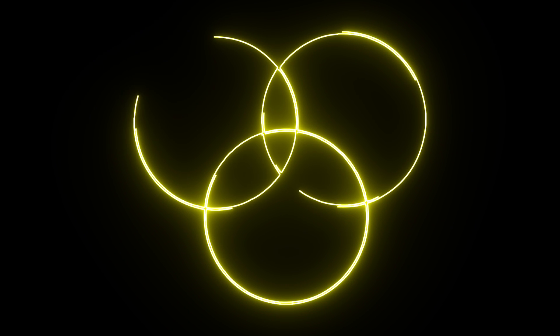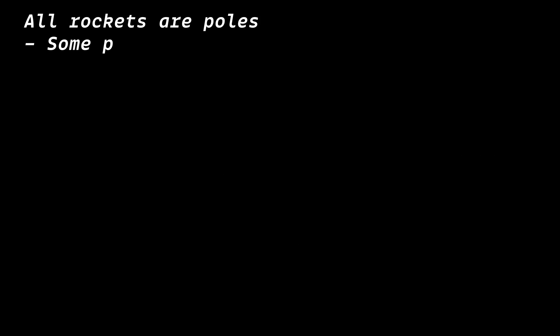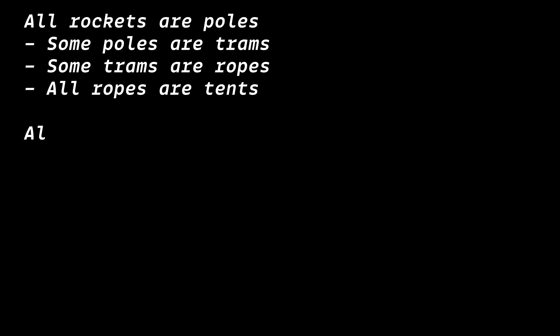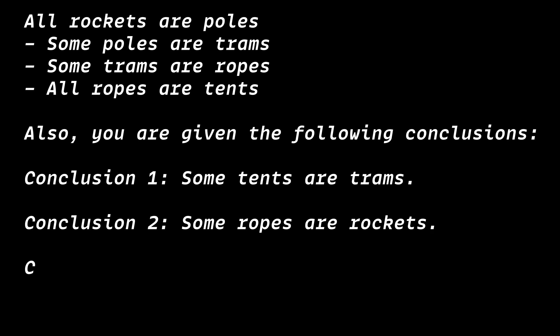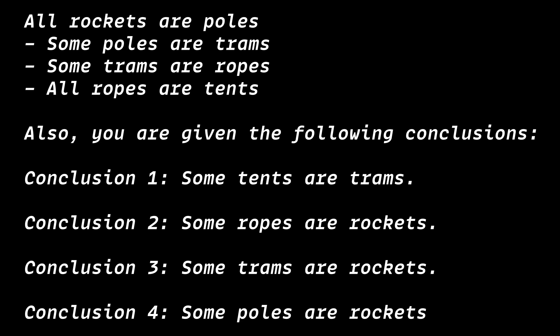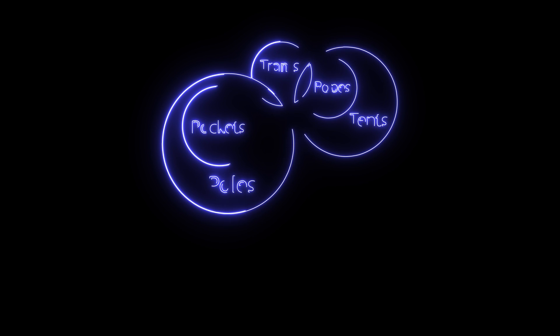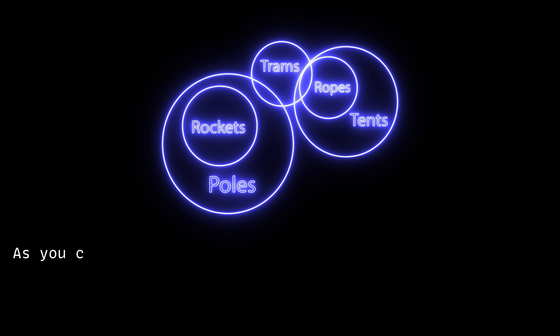Let's explore an example. Imagine you were given the following information: all rockets are poles, some poles are trams, some trams are ropes, all ropes are tents. Also, you are given the following conclusions: Conclusion 1, some tents are trams. Conclusion 2, some ropes are rockets. Conclusion 3, some trams are rockets. Conclusion 4, some poles are rockets. In order to derive the solution, I am going to draw the Venn diagram based on the provided information. As you can see, only conclusion 1 and conclusion 4 are true.